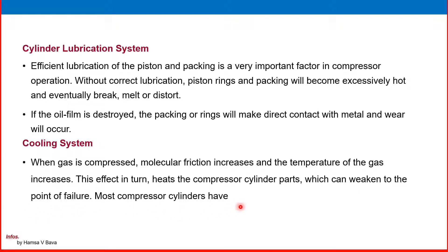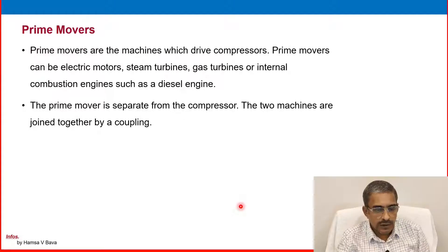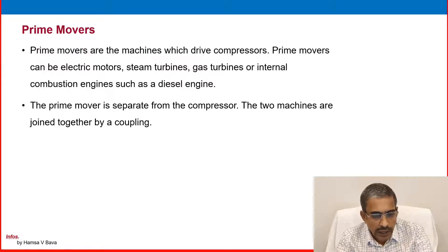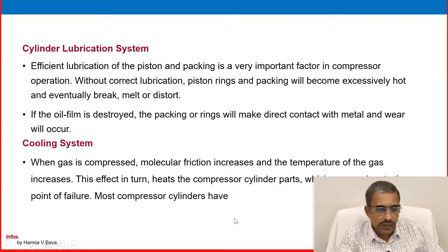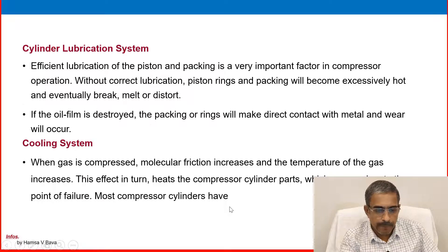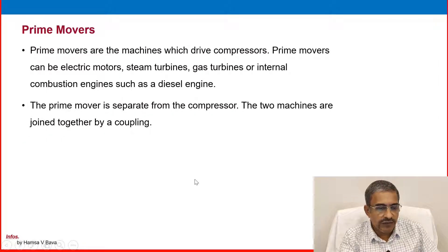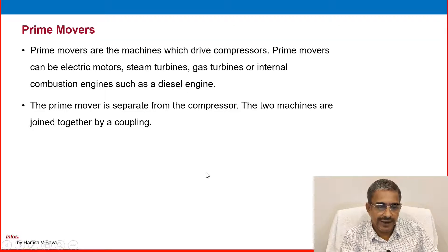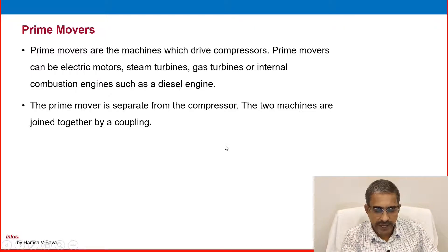Regarding the cooling system: when gas is compressed, molecular friction increases and the temperature of the gas increases. This in turn heats the compressor cylinder parts, which can weaken to the point of failure. Most compressor cylinders have a cooling system. Prime movers are machines that drive the compressor. They can be electric motors, steam turbines, gas turbines, or internal combustion engines such as diesel engines. The prime mover is separate from the compressor; the two machines are joined together by a coupling.